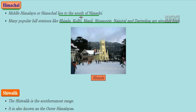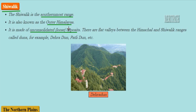Himachal, also known as the Middle Himalaya, lies south of the Himadri. Famous hill stations in this area include Shimla, Kullu, Manali, Mussoorie, Nainital, and Darjeeling. The Shivalik is the southernmost range, also known as the Outer Himalaya. It is made up of unconsolidated loose deposits, with flat valleys between the Himachal and Shivalik ranges called 'duns,' such as Dehradun and Patlidun.